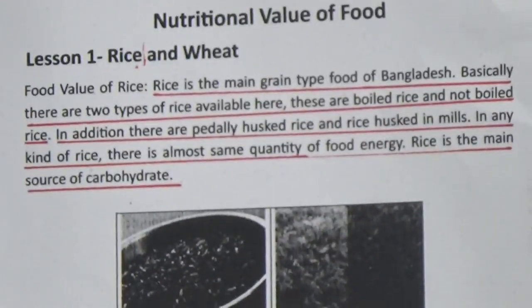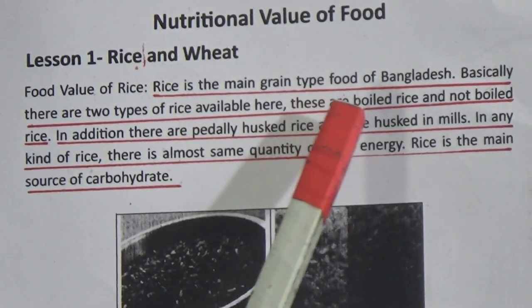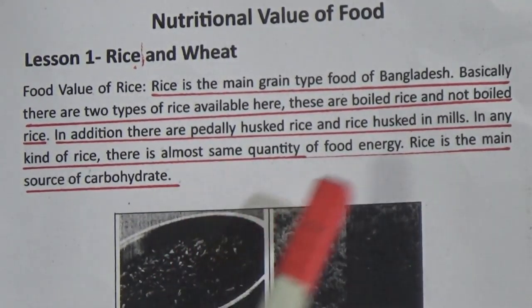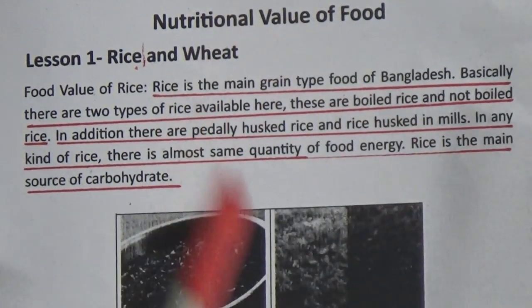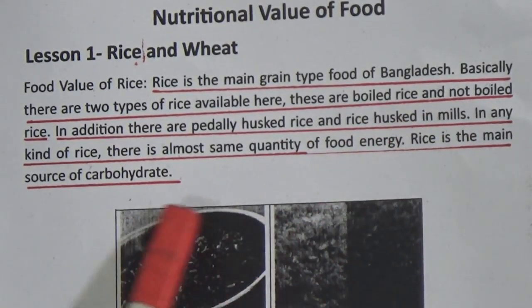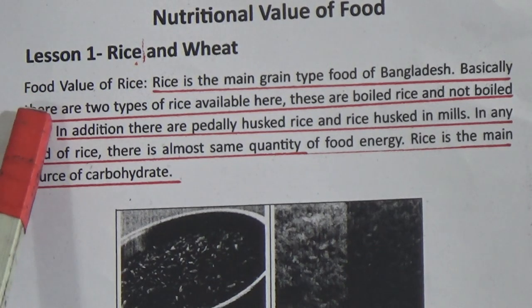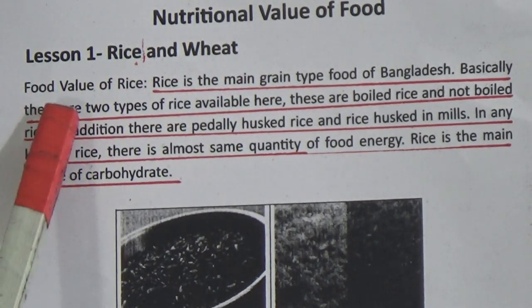Today's chapter is chapter 9: Nutritional Value of Food. This is a big chapter. We have already underlined some important lines that are very important for your objective and creative questions. We will read these underlined sentences basically. Now, relation 1: rice and wheat.